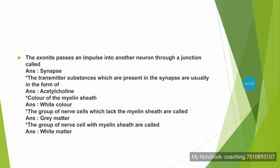The axon passes an impulse to another neuron through a junction called a synapse. The transmitter substances present in the synapse are usually in the form of acetylcholine.